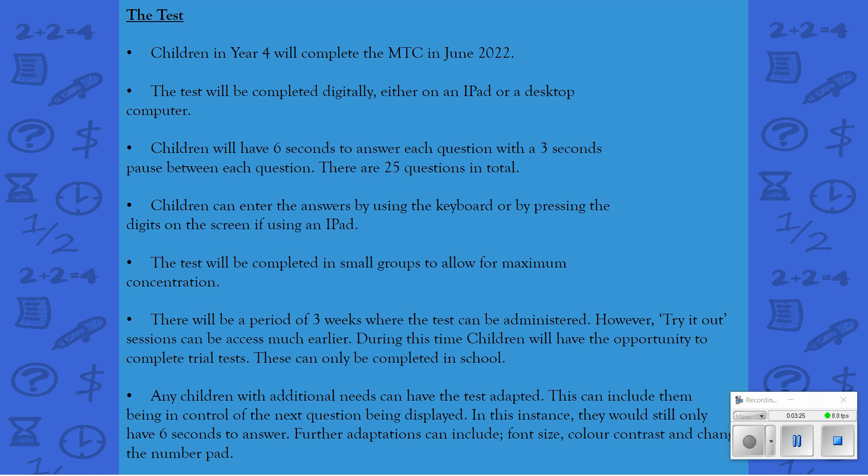Any children with any additional needs can have adaptations made to the test and those are set online by teachers in school. There are many adaptations but they can include the child being in charge of when the question is displayed. So instead of the questions automatically moving on after three seconds, children can have more of a brain break and then click on to the next button for the question to be displayed. If this is set up for your child, they would still only have six seconds to answer the question and there's a maximum of 30 minutes. Other adaptations include things like font size, changing the colours on the screen, and also making any changes to the number pad. If you've got any further questions about these adaptations, please ask your child's class teacher.